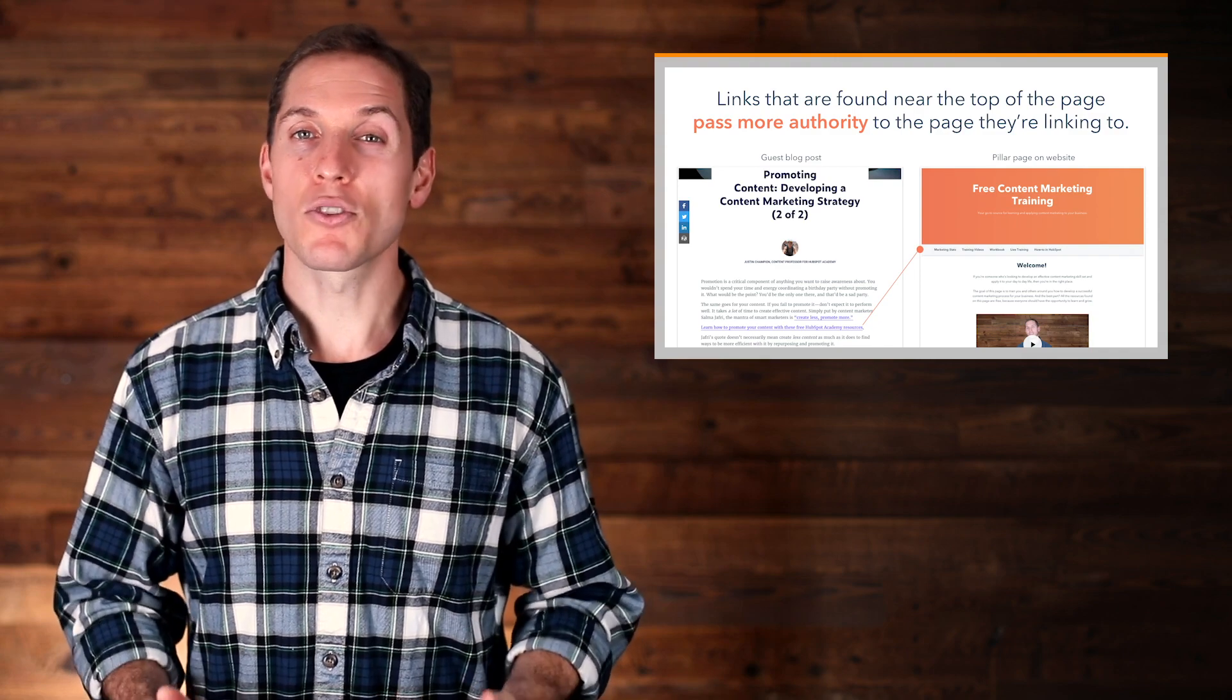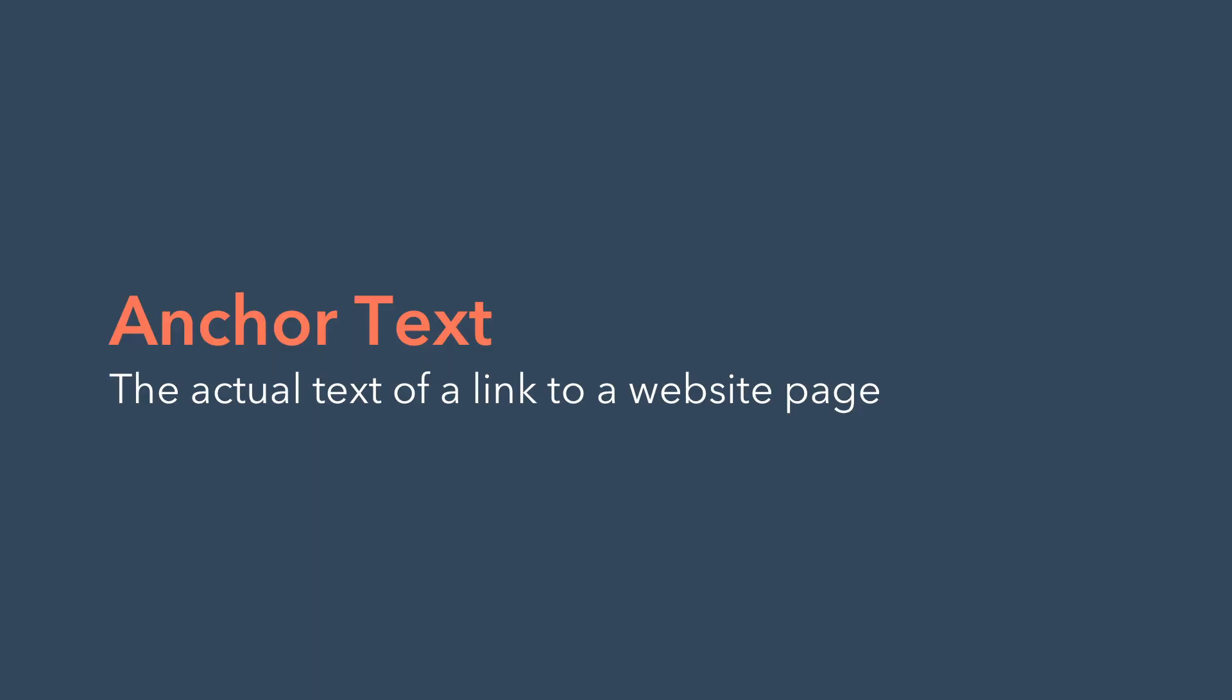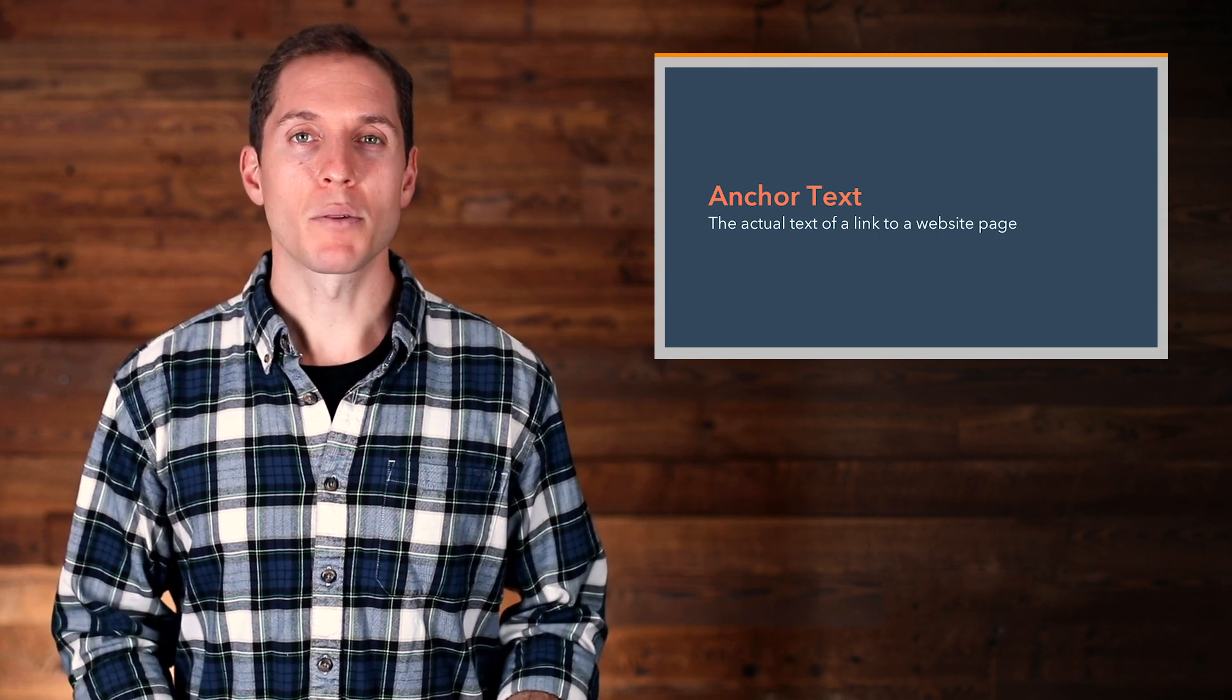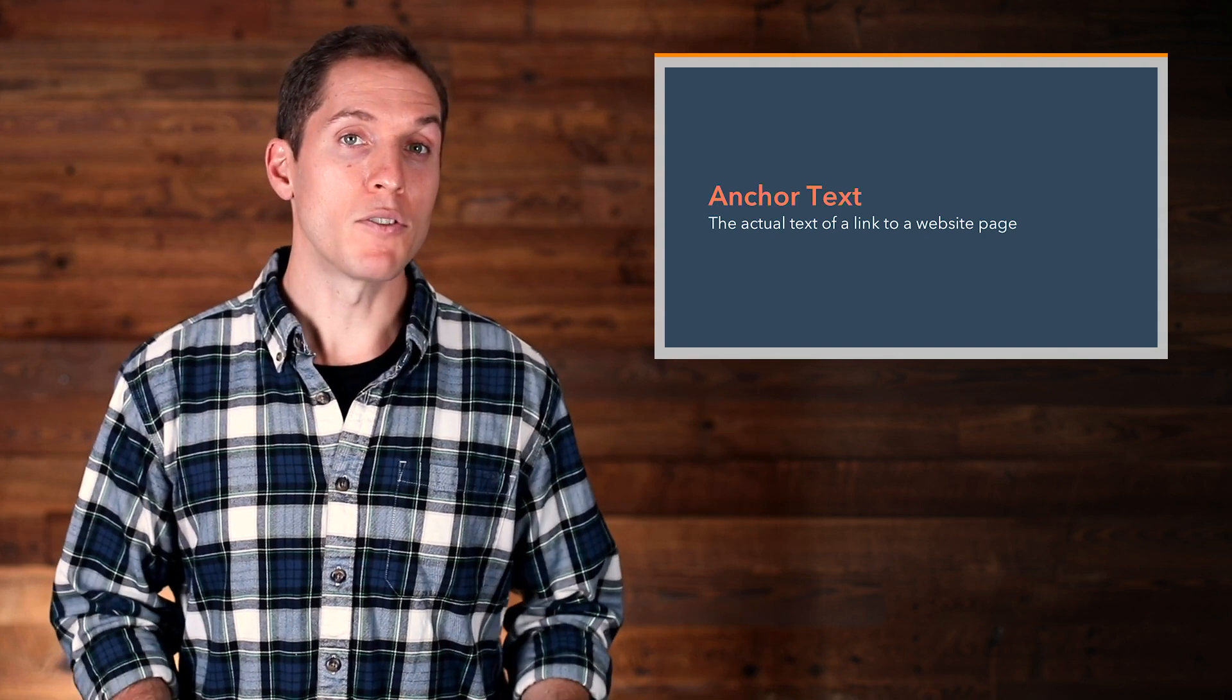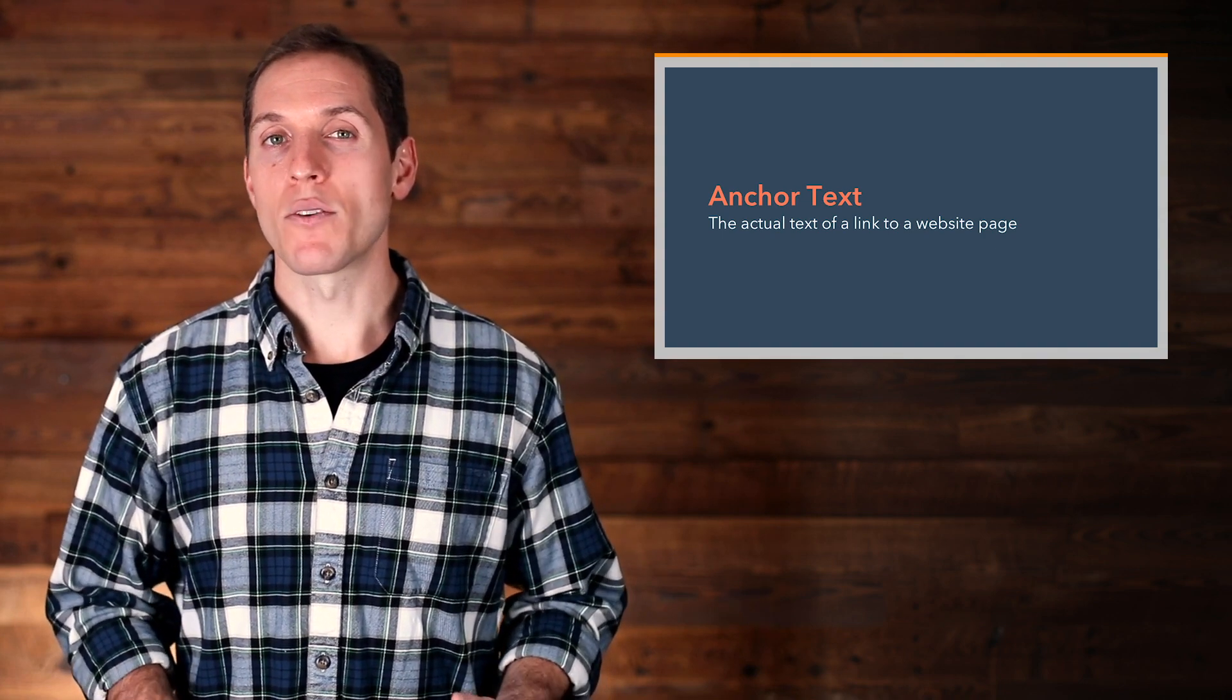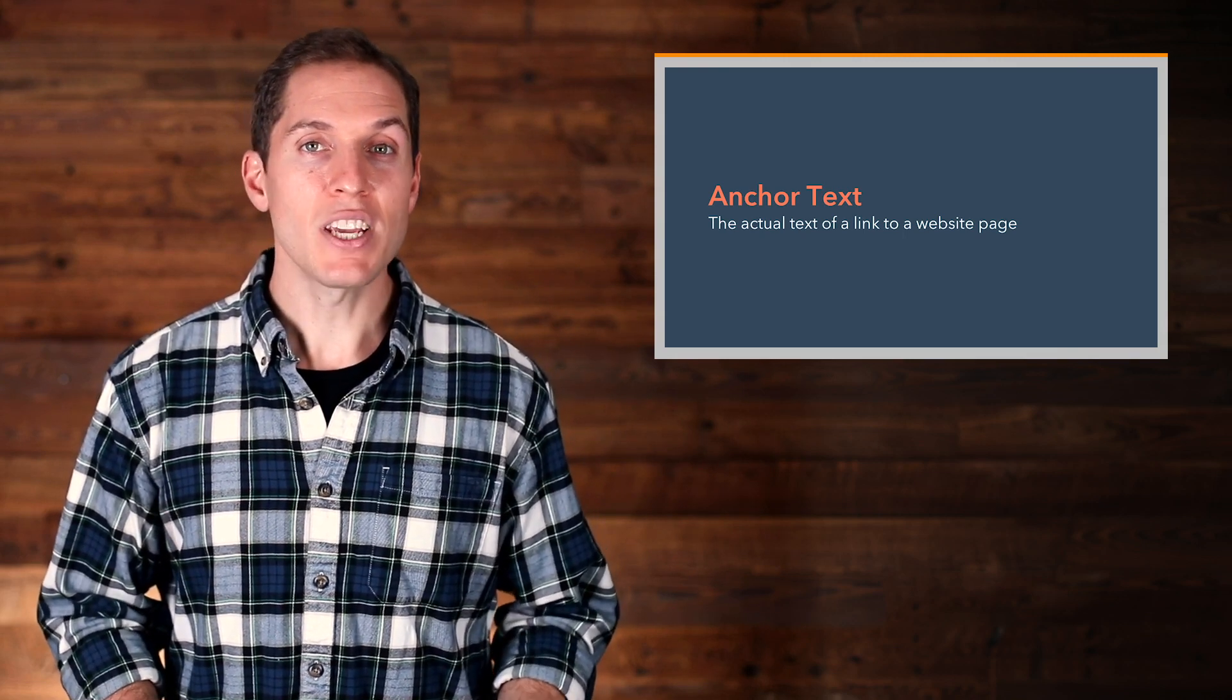On this note, if you're able to be descriptive in the anchor text, then do so. Anchor text is the actual text of a link to a web page. On most websites, this text is usually dark blue and underlined, or purple if you've visited the link in the past. Anchor text helps search engines understand what the destination page is about. It describes what you will see if you click through.